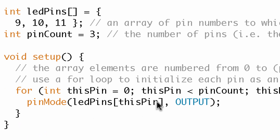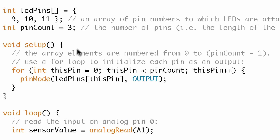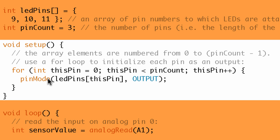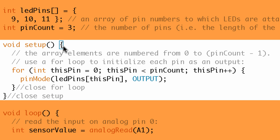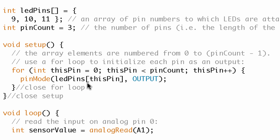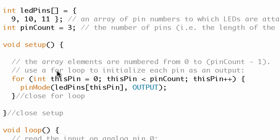Next, he declares and initializes an array — that looks great. And then he's got 'pinCount' for the number of pins in the array — that also looks fine. In void setup, he's using a for loop and an array to set the pin mode as outputs for all the pins. One thing I do is when I see a closing curly bracket, I like to add a comment so I know exactly what it closes. I'll do that for setup too — it makes nested loops much easier to read.